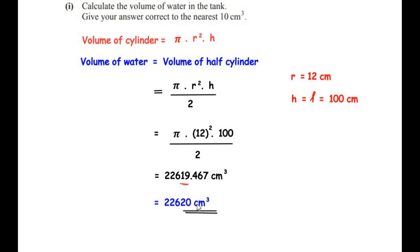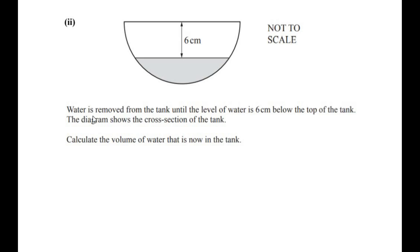Now let us move on to the second sub question. Water is removed from the tank until the level of water is 6cm below the top of the tank. The diagram shows the cross section of the tank. We need to calculate the volume of water that is now in the tank — the same half cylinder as part 1, but with the water level fallen 6cm from the top.